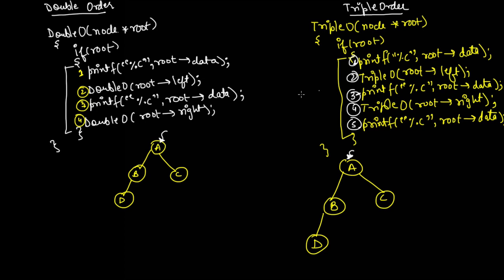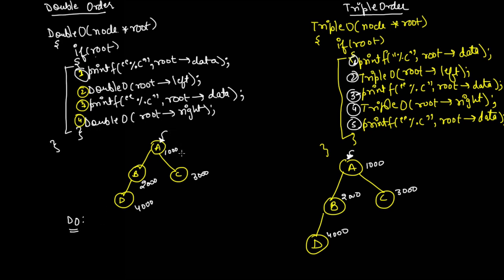Let us execute double order on this tree. The nodes have addresses: 1000 for node A, 2000 for node B, 3000 for node C, and 4000 for node D. Initially when we call double order with 1000, root is 1000 which is not null, so the if condition is true, and for node A we execute line number 1.